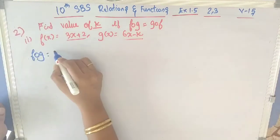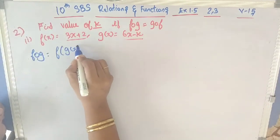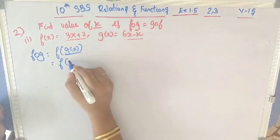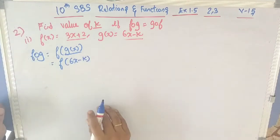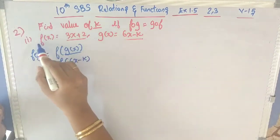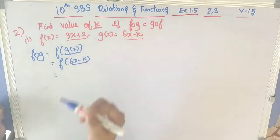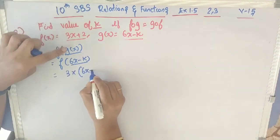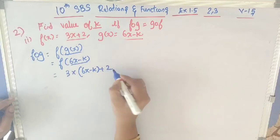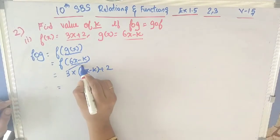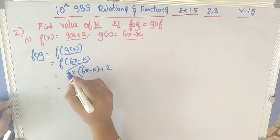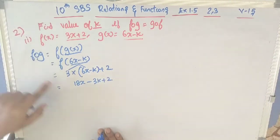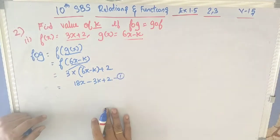First let's find f∘g, which is f of g(x). g(x) = 6x − k, so we find f(6x − k). In f(x), replace x with 6x − k: 3(6x − k) + 2 = 18x − 3k + 2. I am marking this as equation 1.